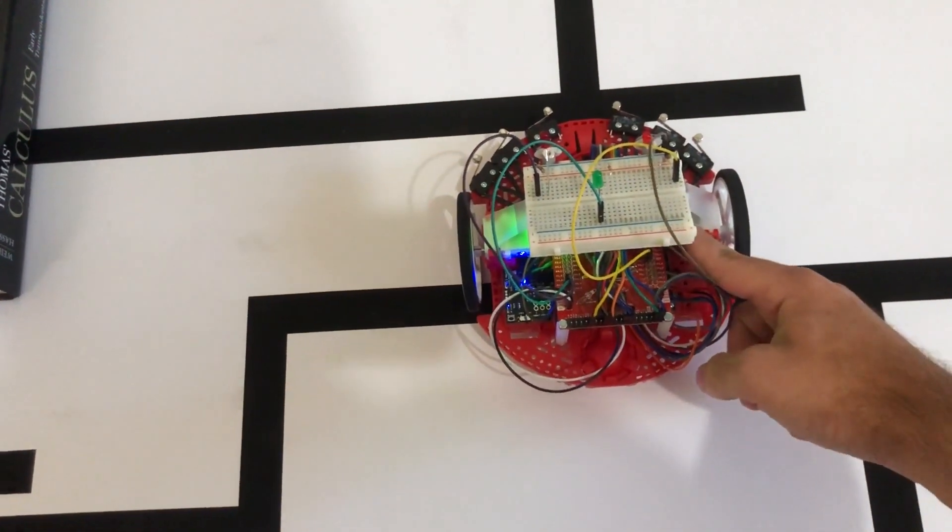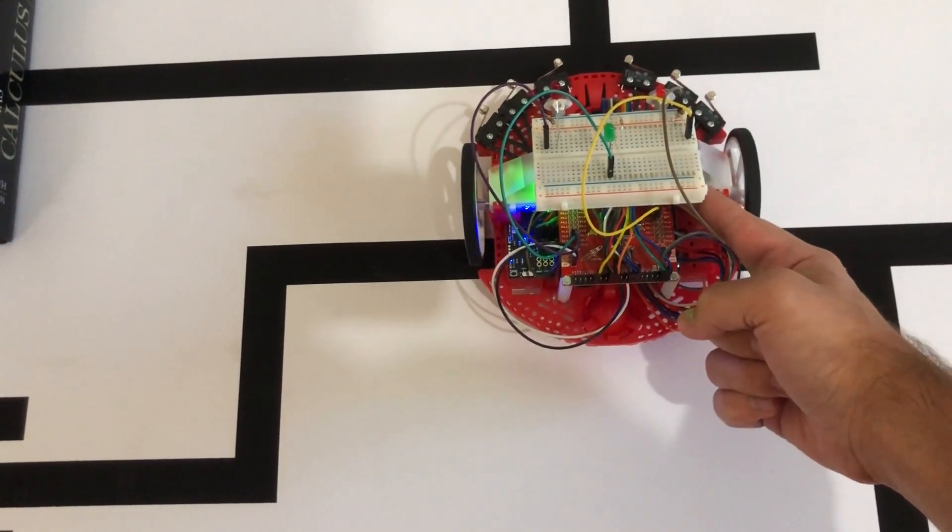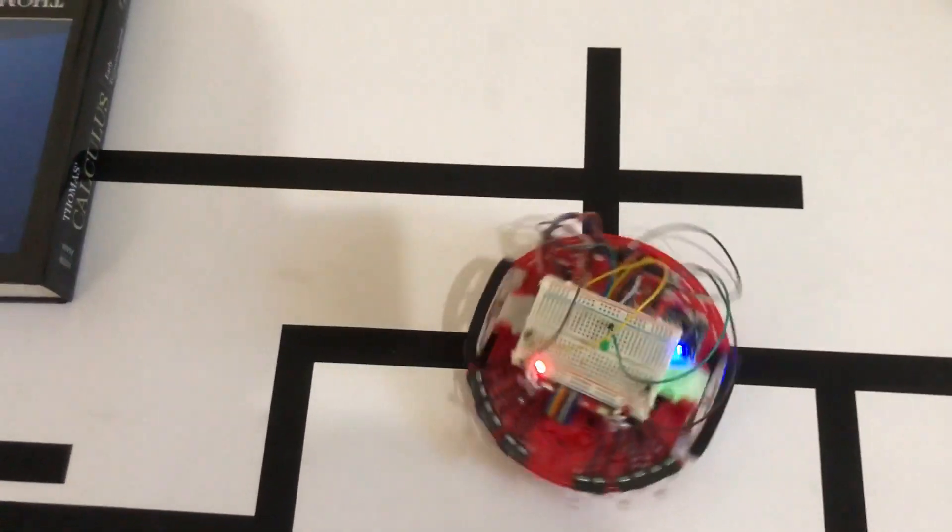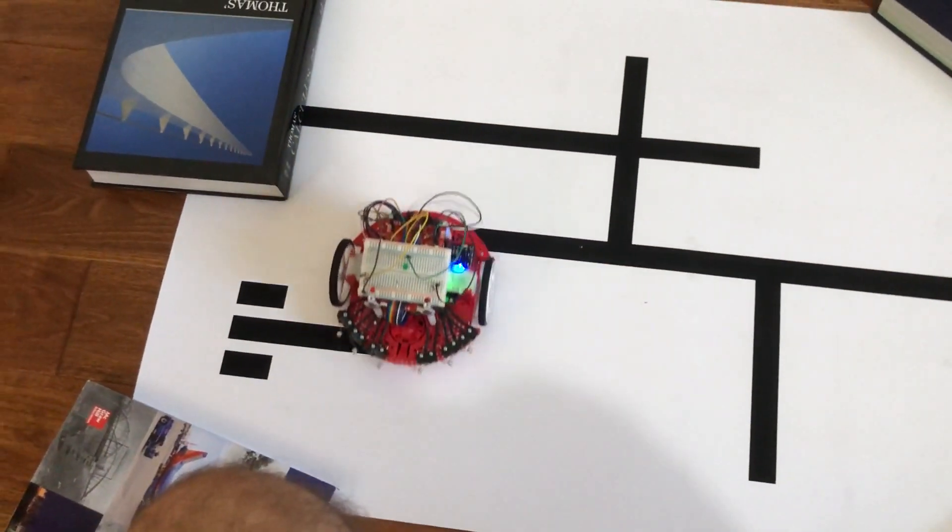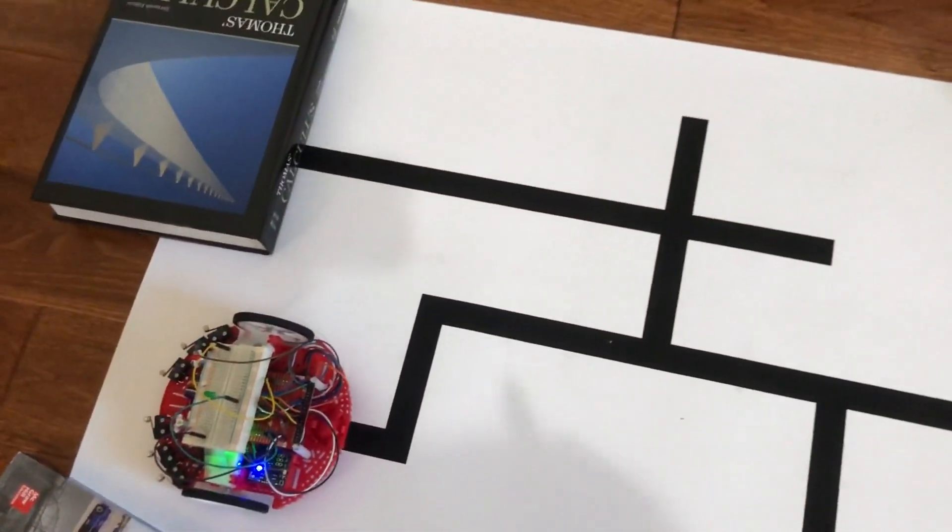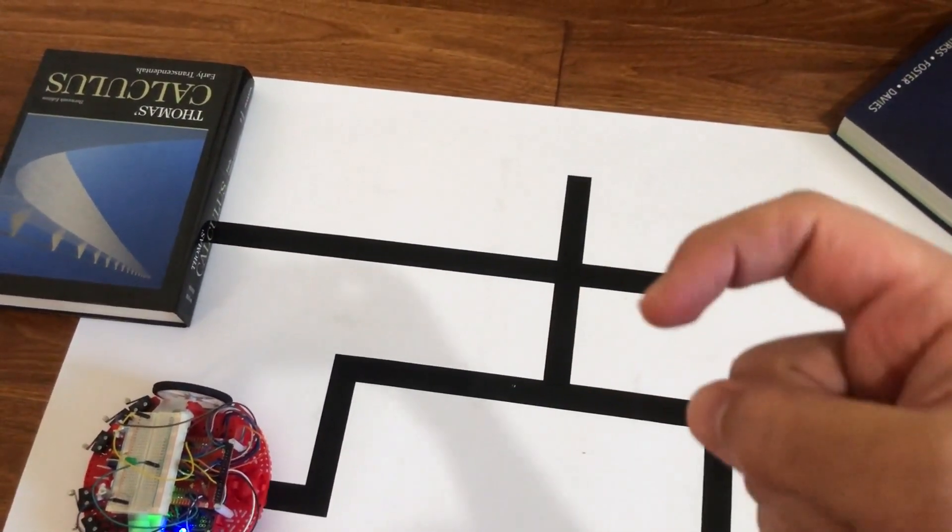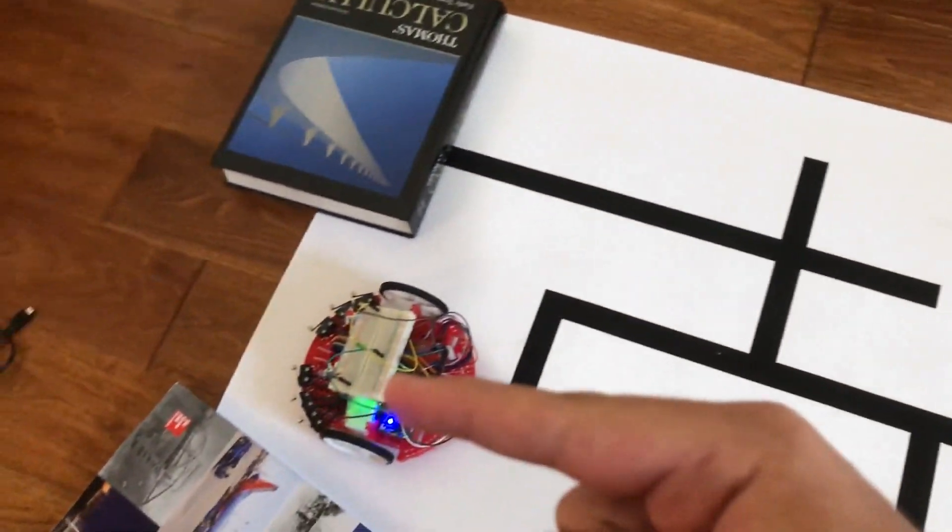I'm pressing the right button so it shows us the shortest path to get back to the treasure. As you can see, it remembers the shortest path—which starting from here facing this way was to turn around and then go right over here.